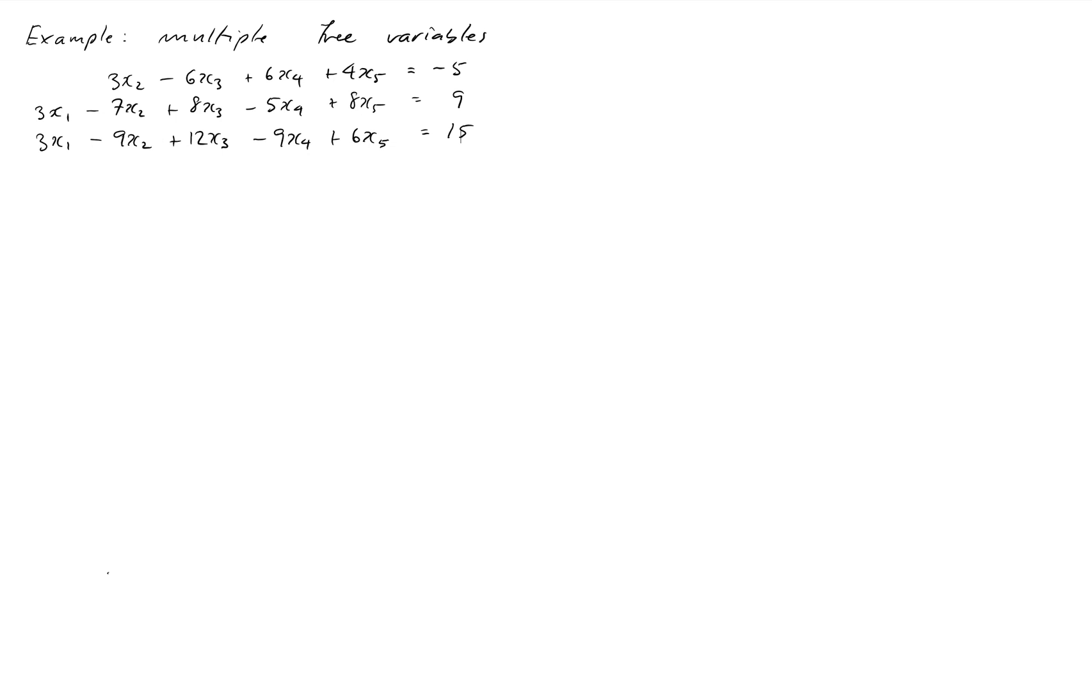In this one we're going to discover that we'll end up with a system that has multiple free variables and we'll see how to deal with this. So as usual, we'll attack our system by Gaussian elimination and see what it looks like when we get to echelon form. The first step is to write down the augmented matrix of the system.